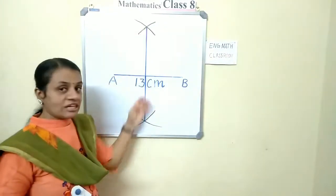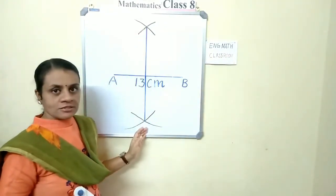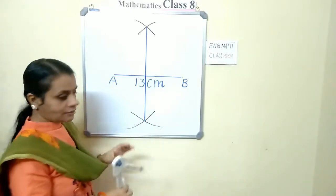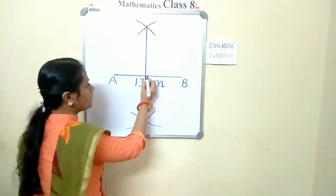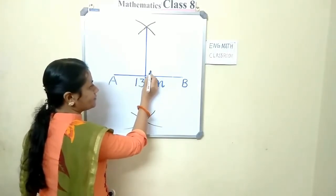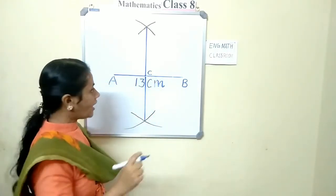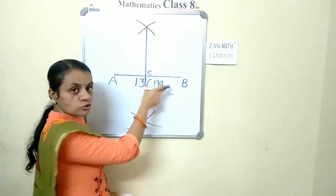Join these two intersecting points and mark this point, meeting point C. And here AC equal to BC.